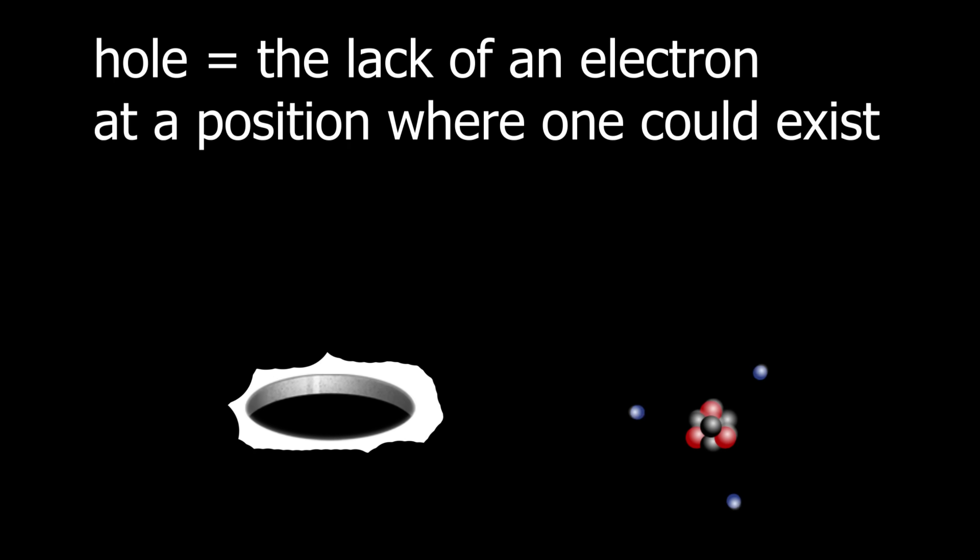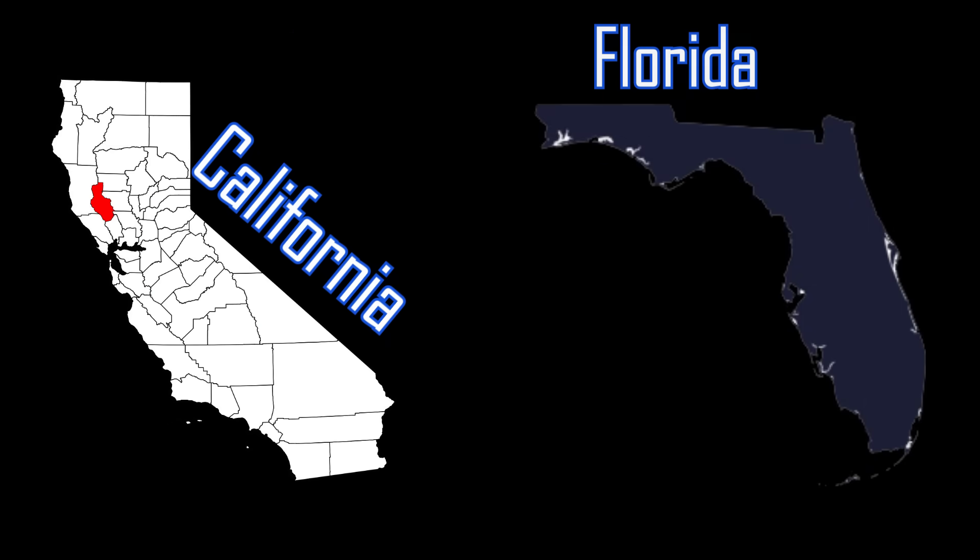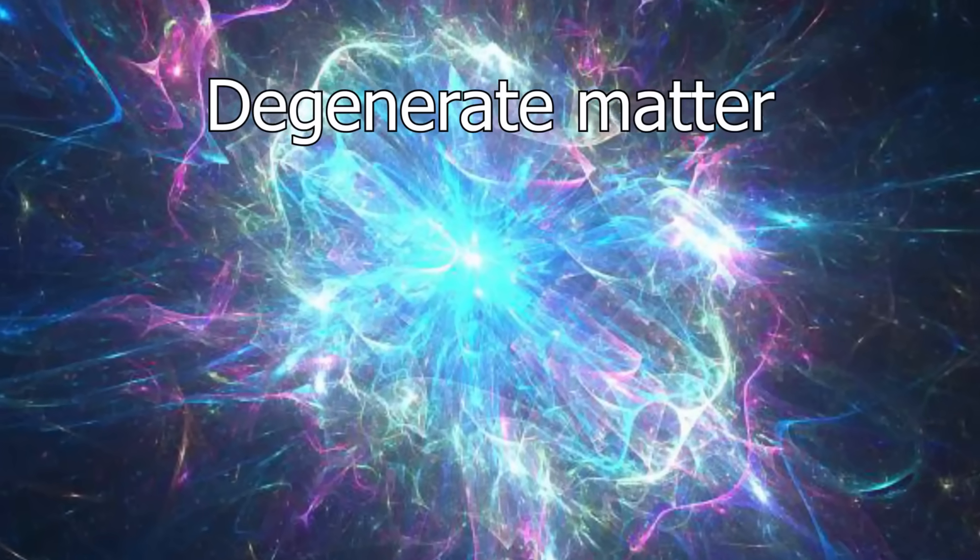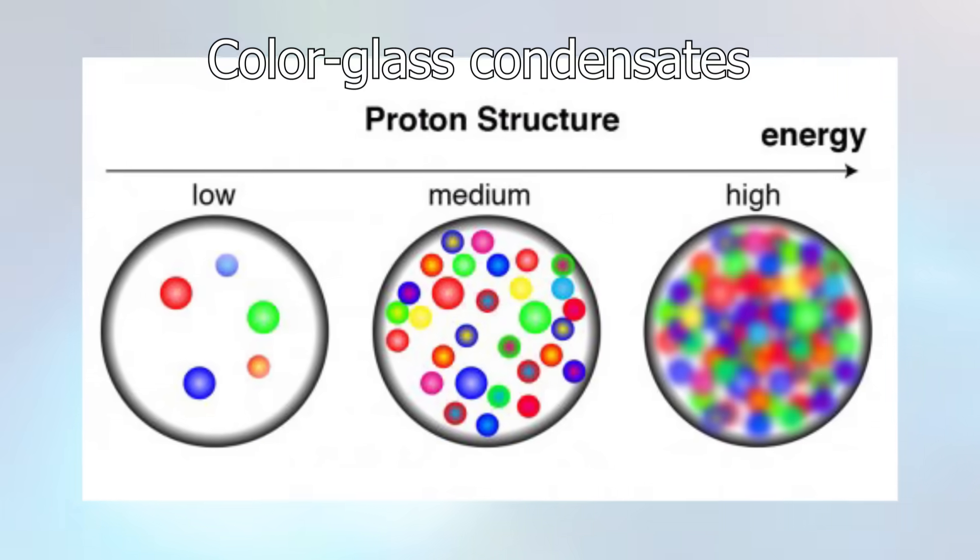Dropleton. A quantum fog of electrons and holes that flow around each other and even ripple like a liquid, rather than existing as discrete pairs. We also have high energy states and very high energy states. In these we have degenerate matter, quark matter and color glass condensates.